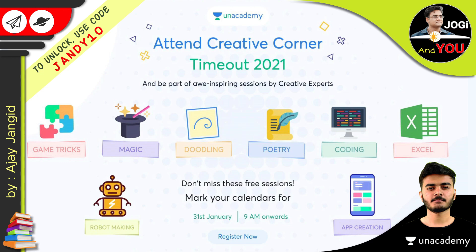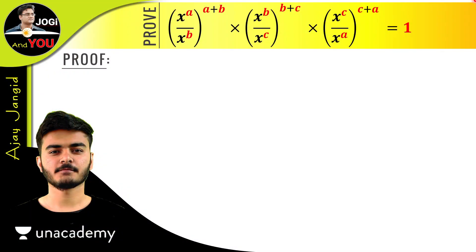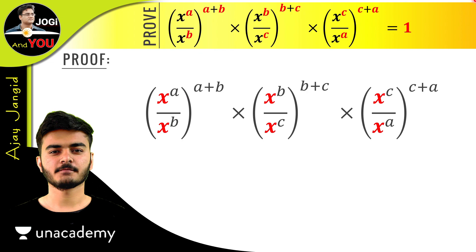So let's get back to the question. The question we have is (x^a / x^b)^(a+b) × (x^b / x^c)^(b+c) × (x^c / x^a)^(c+a). And we have to prove that this left side is equal to 1.